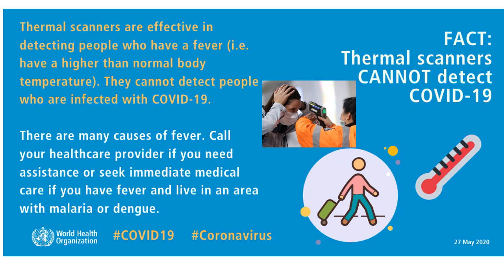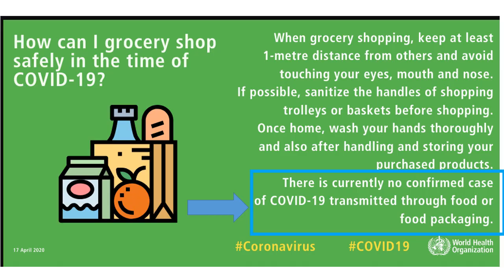How do you do grocery shopping safely in COVID times? Take precautions like keeping at least one meter distance from others, avoid touching your eyes, mouth, and nose, and if possible sanitize the handles of the shopping trolley before shopping. Once home, wash your hands thoroughly and also after handling and storing your purchased products. Importantly: there is currently no confirmed case of COVID-19 transmitted through food or food packaging. This is from WHO itself in April 2020. So take necessary precautions, but please don't panic.